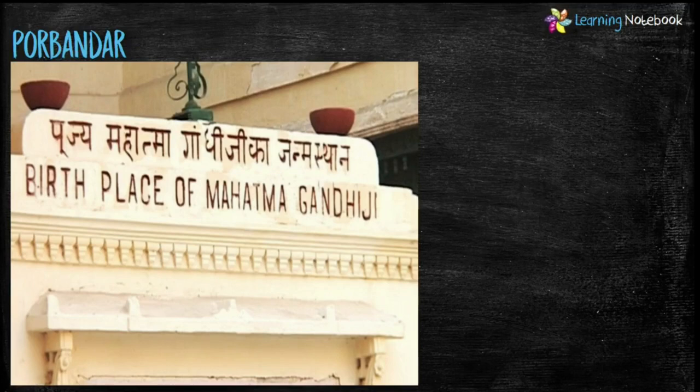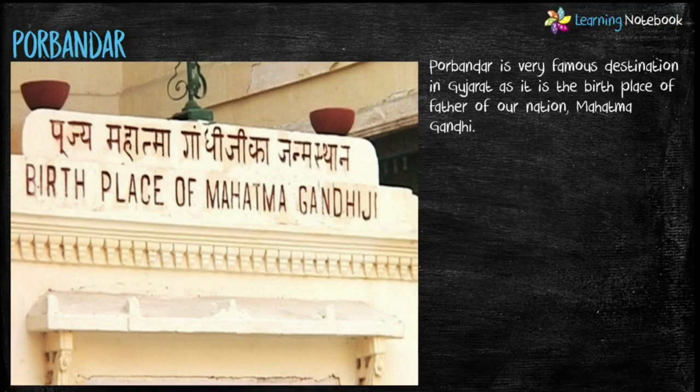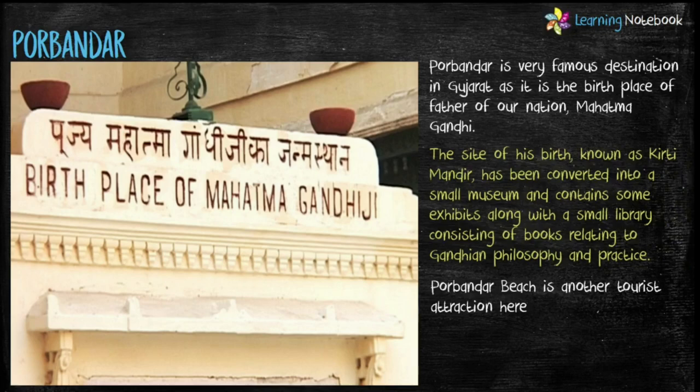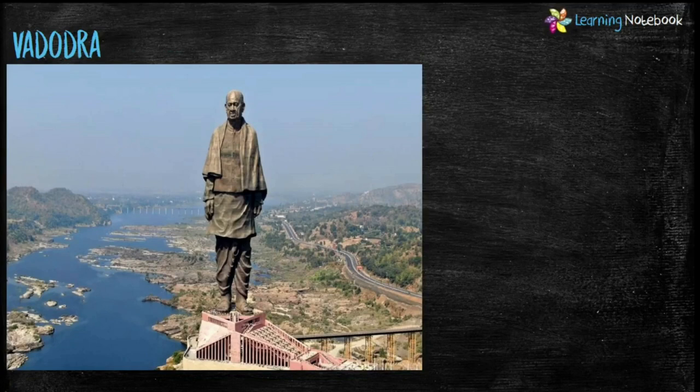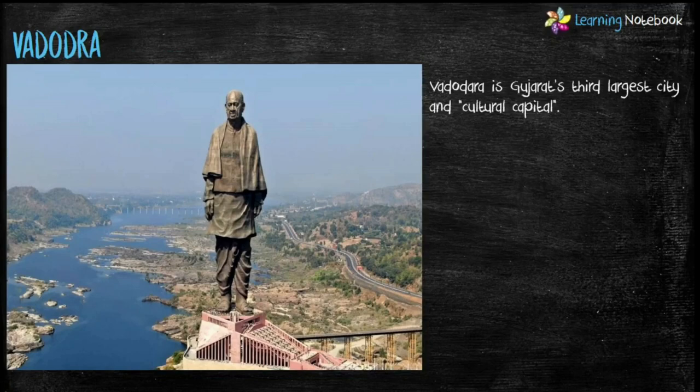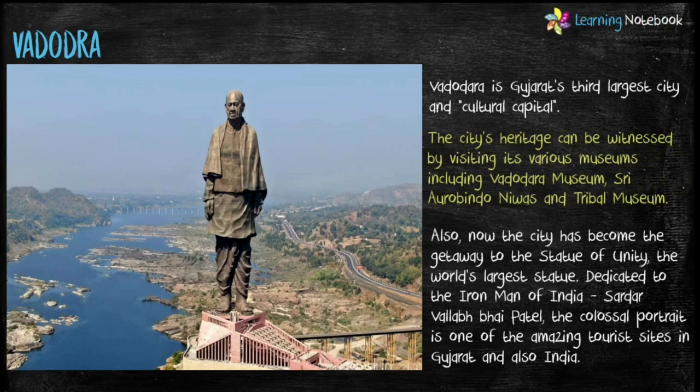Next site is Porbandar. It is a very famous destination in Gujarat as it is the birthplace of the father of our nation, Mahatma Gandhi. Porbandar Beach is another tourist attraction here. Next is Vadodara, Gujarat's third largest city and its cultural capital. The main attraction is the Statue of Unity, the world's largest statue, dedicated to the Iron Man of India, Sardar Vallabhbhai Patel.